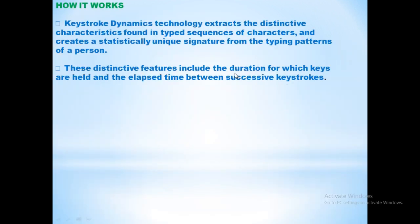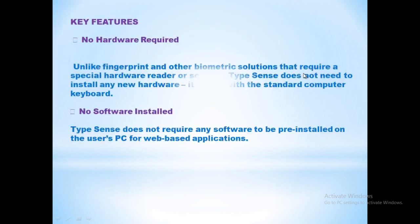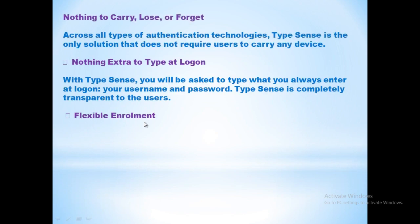Keystroke dynamic technology extracts the distinctive characteristics found in the typed sequence of characters and creates a statistically unique signature from the typing patterns of a person. These distinctive features include the duration for which keys are held and the elapsed time between successive keystrokes. Key features include: no hardware required, no software installation needed, nothing to carry, lose, or forget, nothing extra to type at logon, and flexible enrollment.